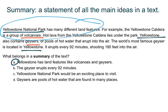Quickly, I need to check to make sure nothing else here belongs in a summary as well. Option B just gives me a detail — it's too small to include in the summary of the text. Option C does talk about Yellowstone, but it gives an opinion; it says it would be exciting to visit, and that does not belong in a summary. Option D doesn't even mention Yellowstone, so it probably is not a main idea of the text.